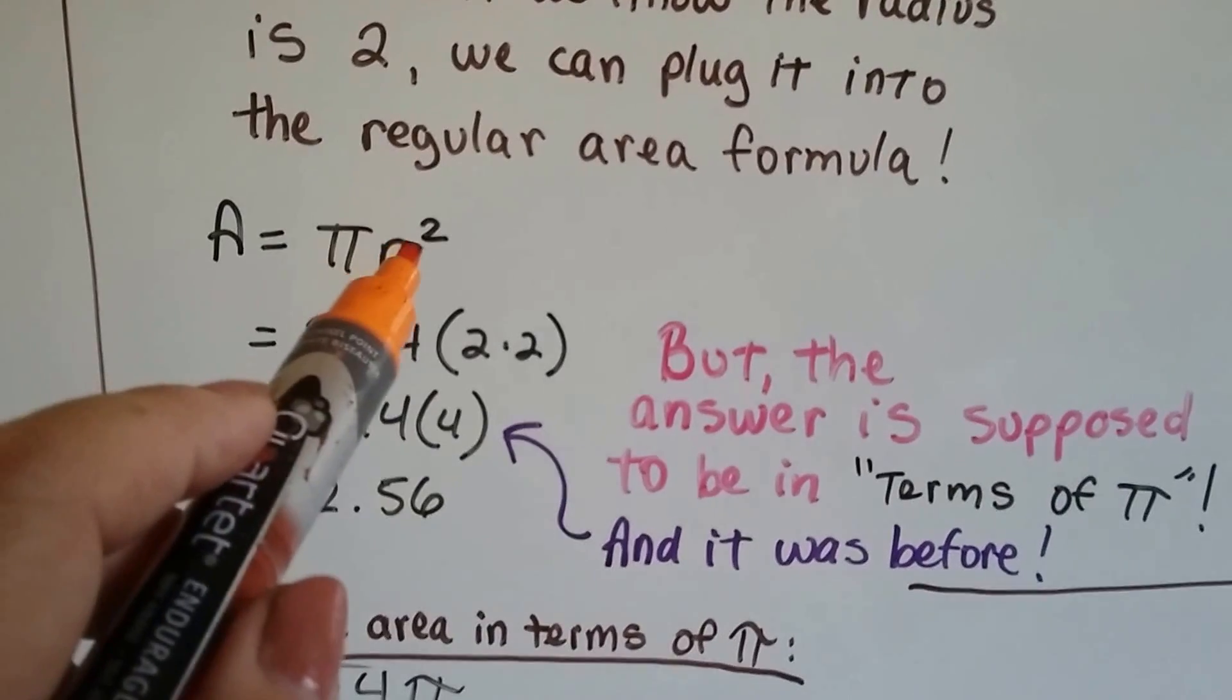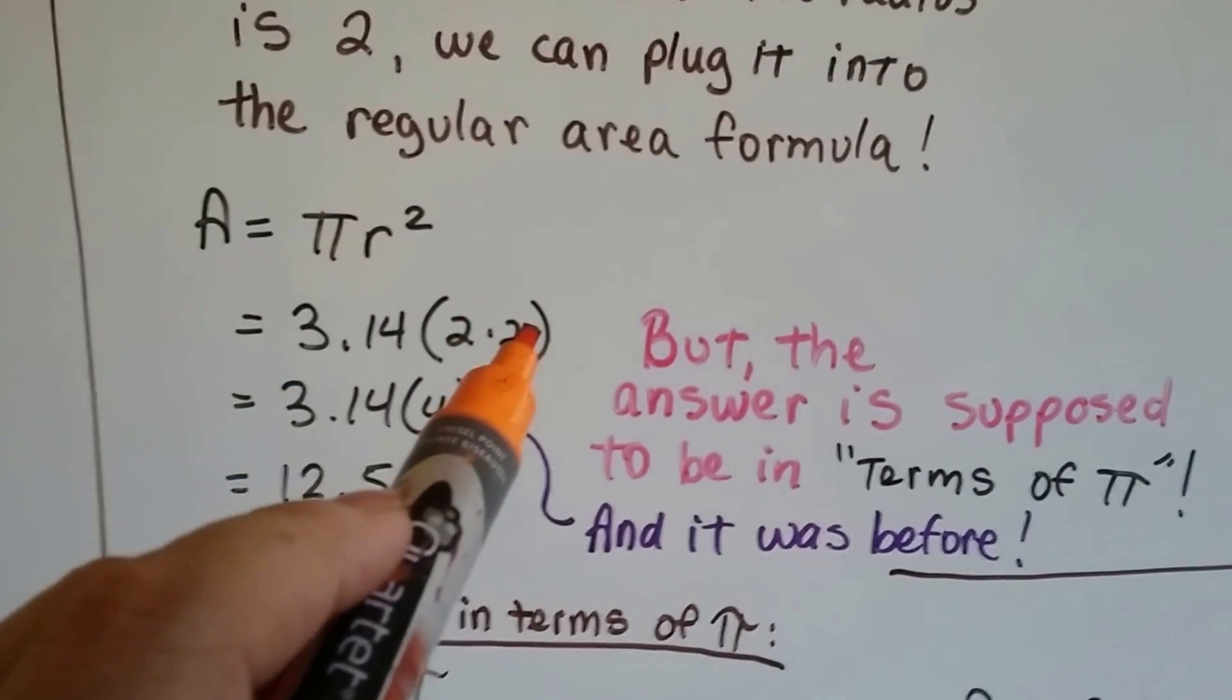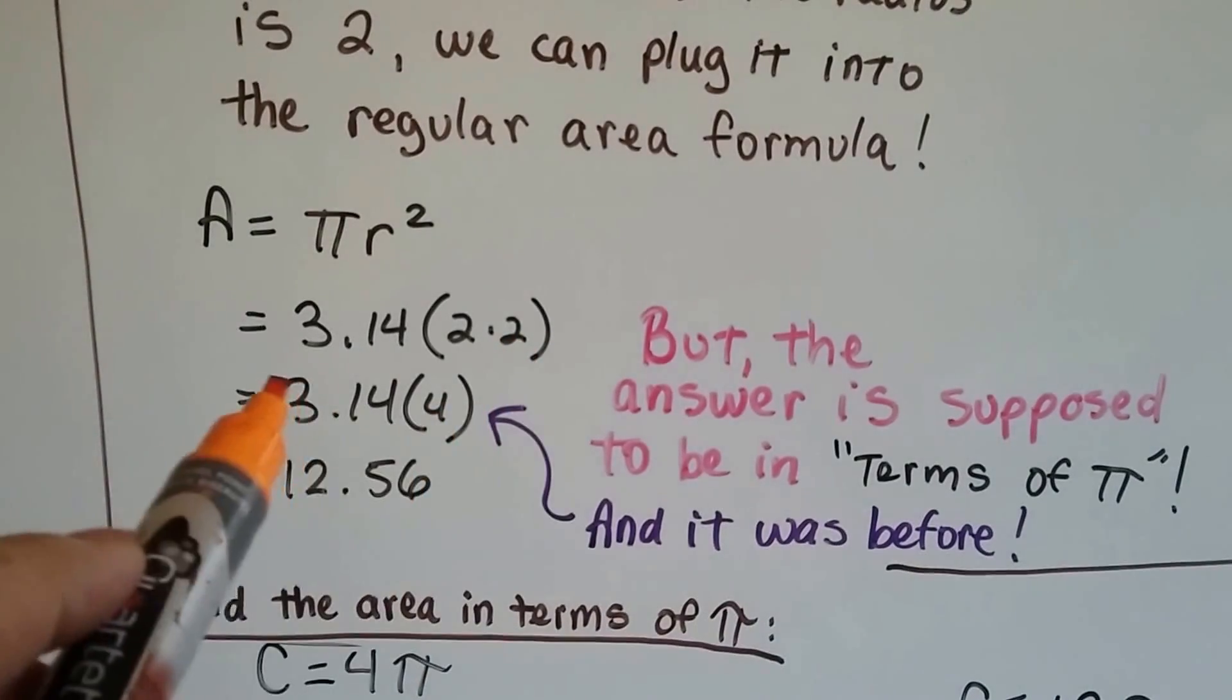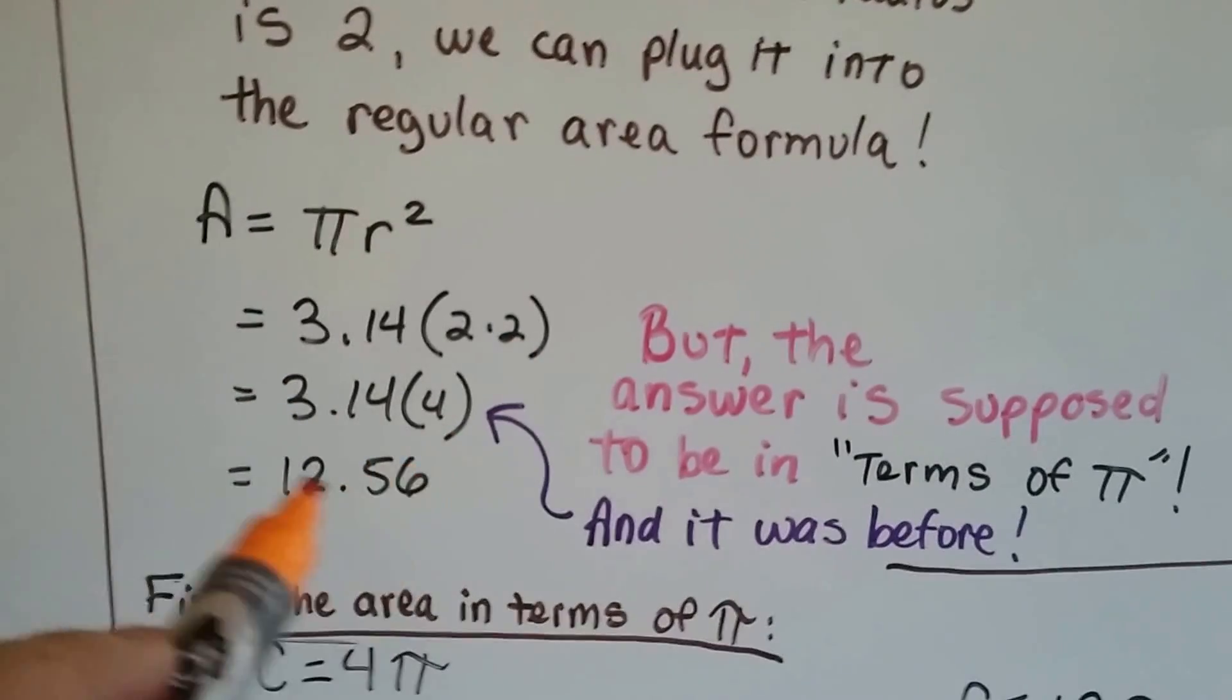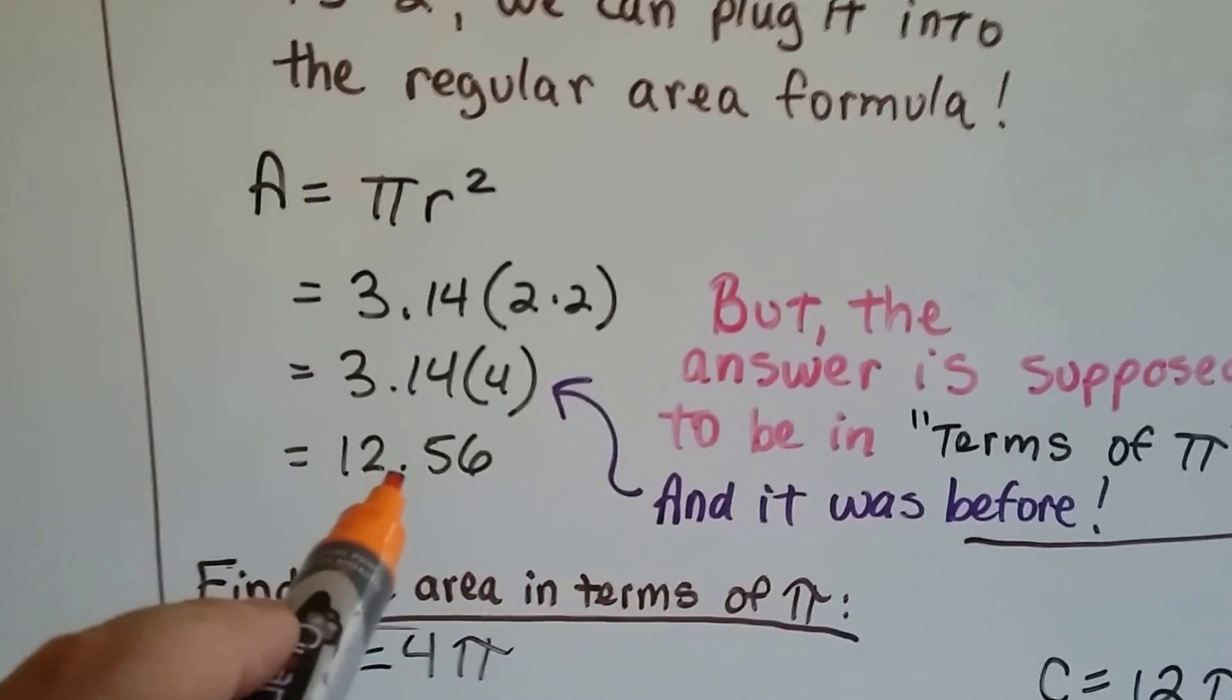So, we know that's a 2, so it's 2 times 2, right? 3.14 times 2 times 2. That means 3.14 times 4. And if we multiply that, we get a 12.56. So, the area is 12.56.